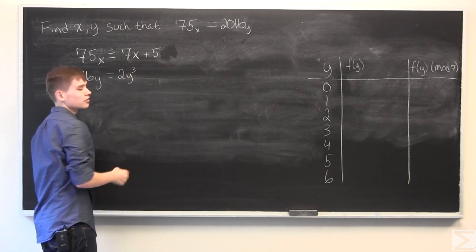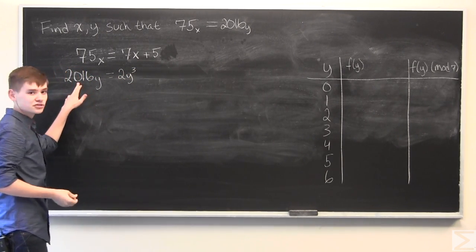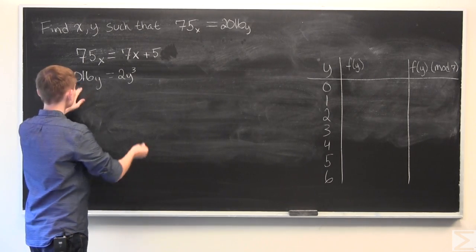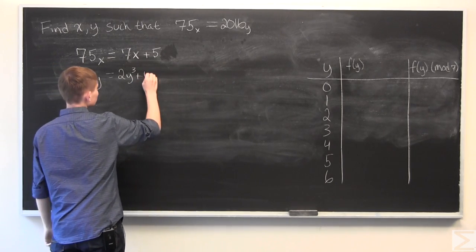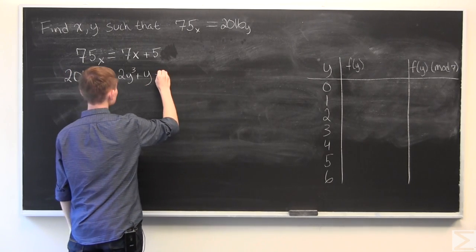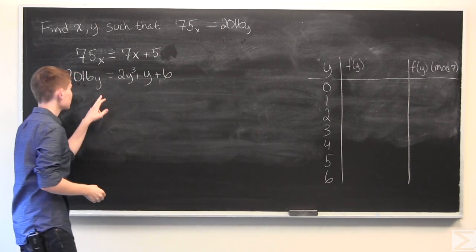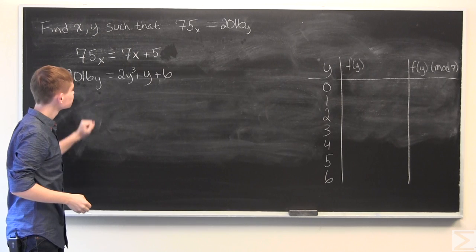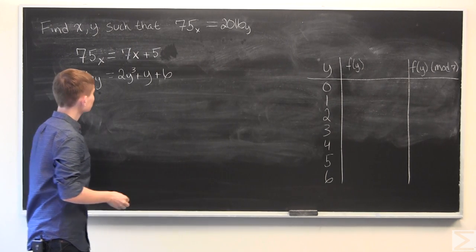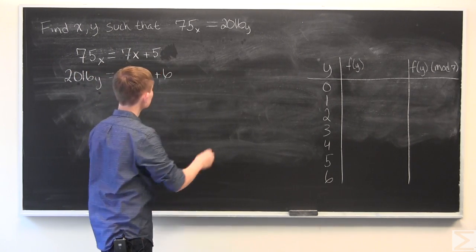2 times y to the third. This is 0, so there's no y squared component. Plus y times y times 1 and plus 6 times y to the zeroth power. And what we're going to do is just set these two equal to each other again.